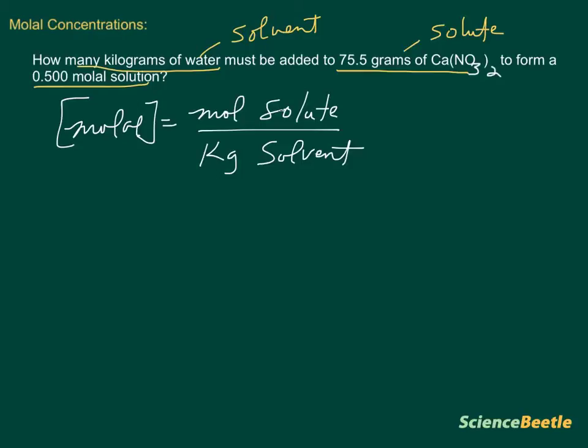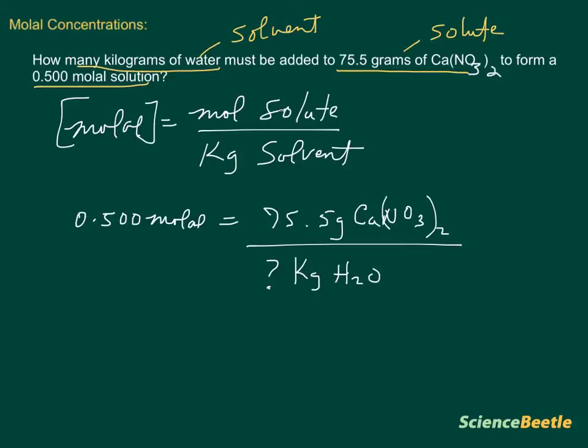Since we know the concentration already, that's going to be 0.500 molal, and this is going to be equal to the moles of the solute. We don't know what that is yet because we don't have moles, but what we do know is we have 75.5 grams of Ca(NO3)2, and this is going to be divided by the kilograms of H2O, which is what we're looking for. That's the question mark.